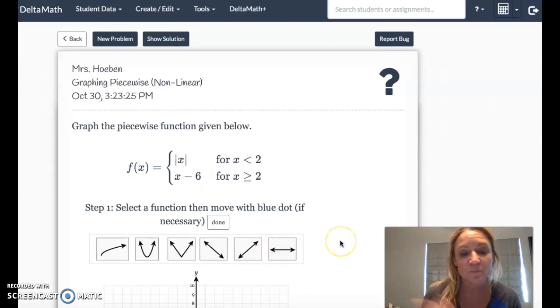For these, you need to know the basic shapes for your basic graphs. This one is a square root. This one is squared. This one is an absolute value. And then these three are lines.